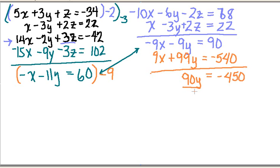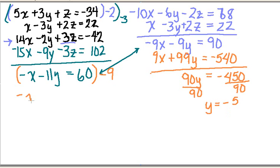So to solve for y, I'm going to divide both sides by 90. I end up with y equal to minus 5, because minus 450 divided by 90 gives me minus 5. So now I know what y is. I can pick one of these two equations with two variables to solve for x. I'm going to use this one. Now I know what y is, so I can plug in minus 5 for y.